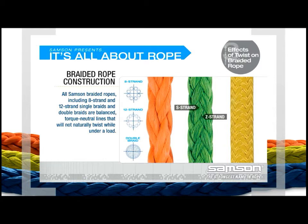In order for a rope to maximize its full-strength potential, all strands of the rope must share the load equally. This load-sharing, and thus the strength of the rope, is reduced when a rope is twisted.